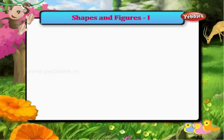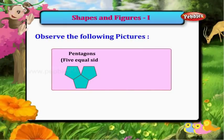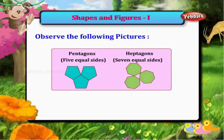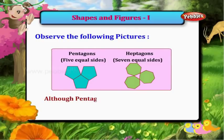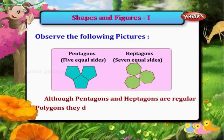Now observe the following pictures. Pentagons have five equal sides. Heptagons have seven equal sides. Although pentagons and heptagons are regular polygons, they do not tessellate.